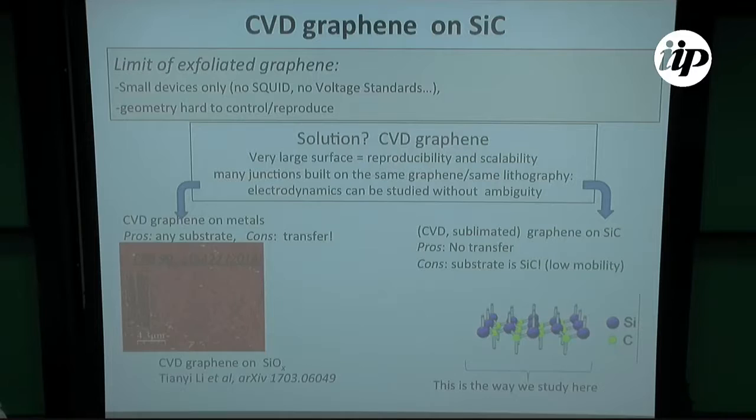The drawback is that silicon carbide has often defects and puddles and things like that, so that at the moment mobility of graphene is relatively low, and the transport of electrons is diffusive, not ballistic. Still, we hope to improve the sample and first of all to put some gate on top.